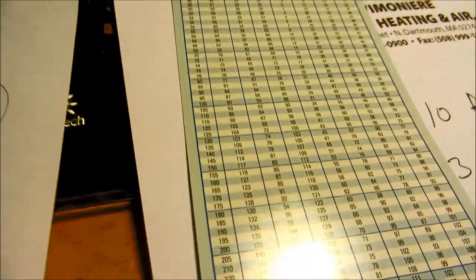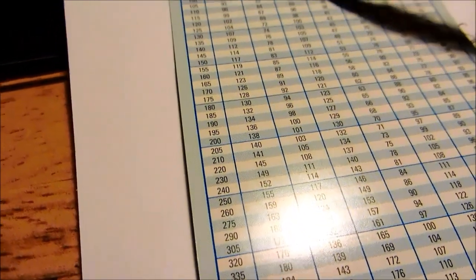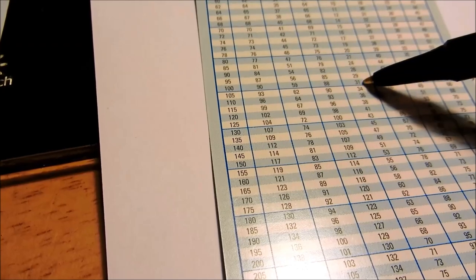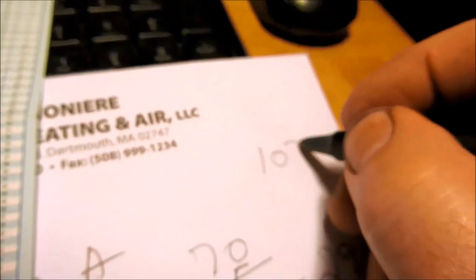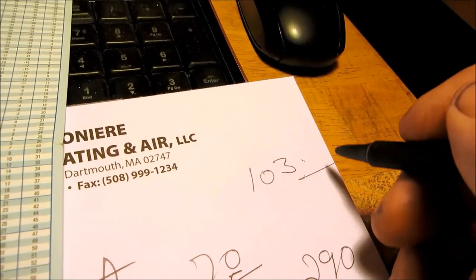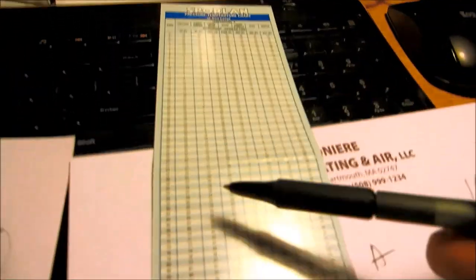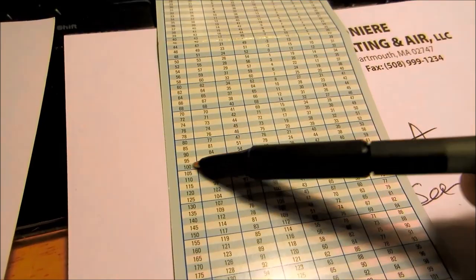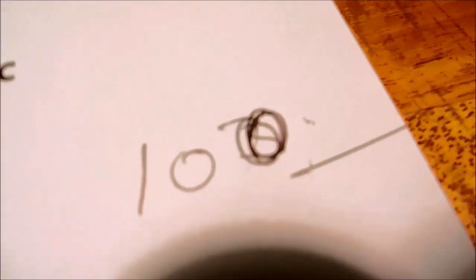58 PSI on R-22 you need to be worried about because you're starting to get into freezing sections. Anything below 100 on 410a, let's see, yeah 100 is 31 degrees. So anything below like 103 on the suction side on 410a you need to really be concerned about that.